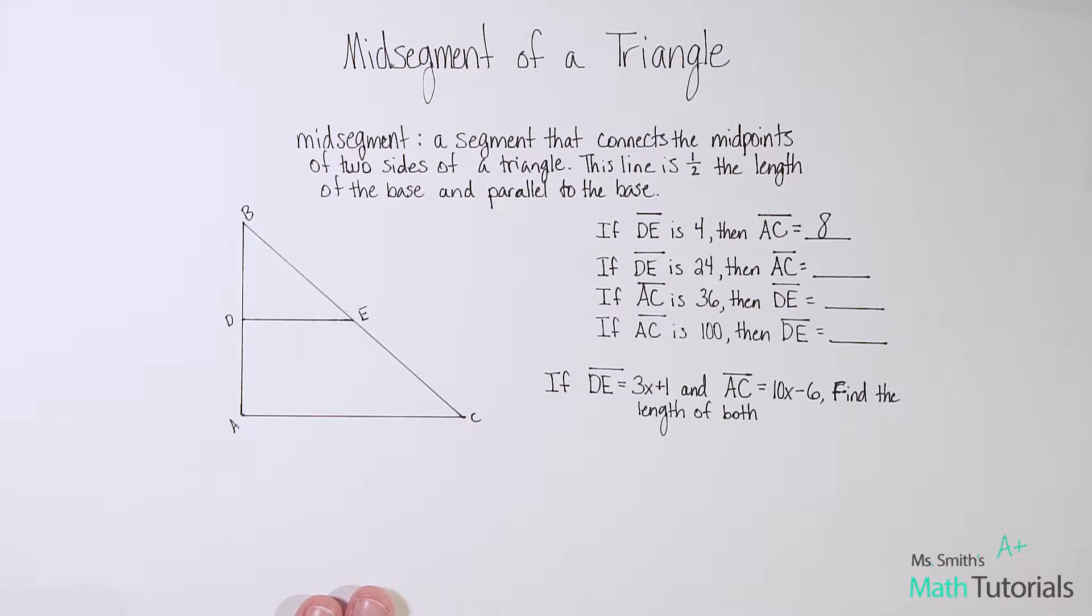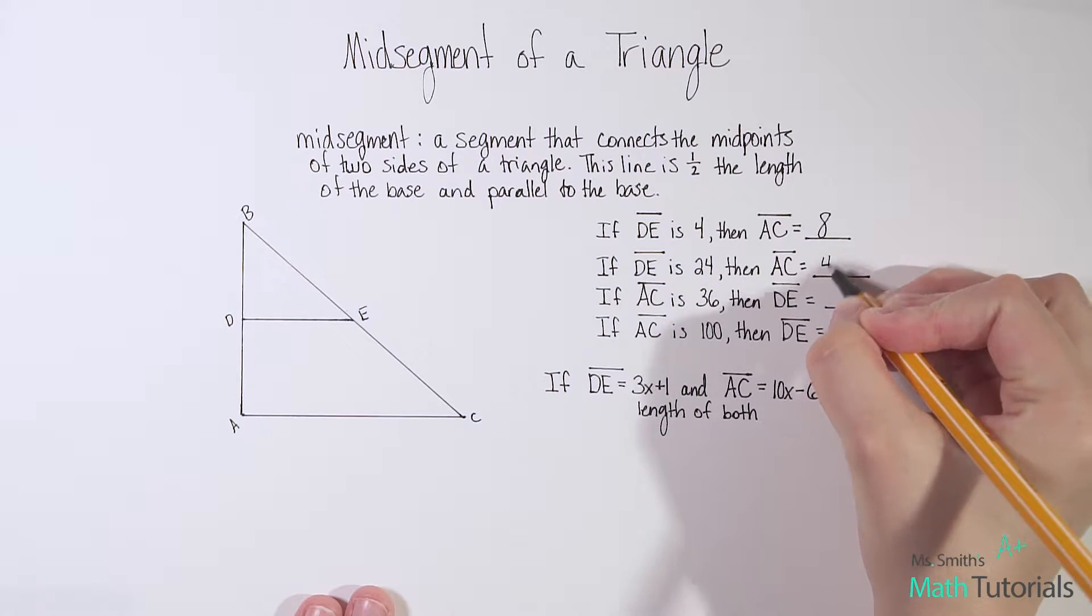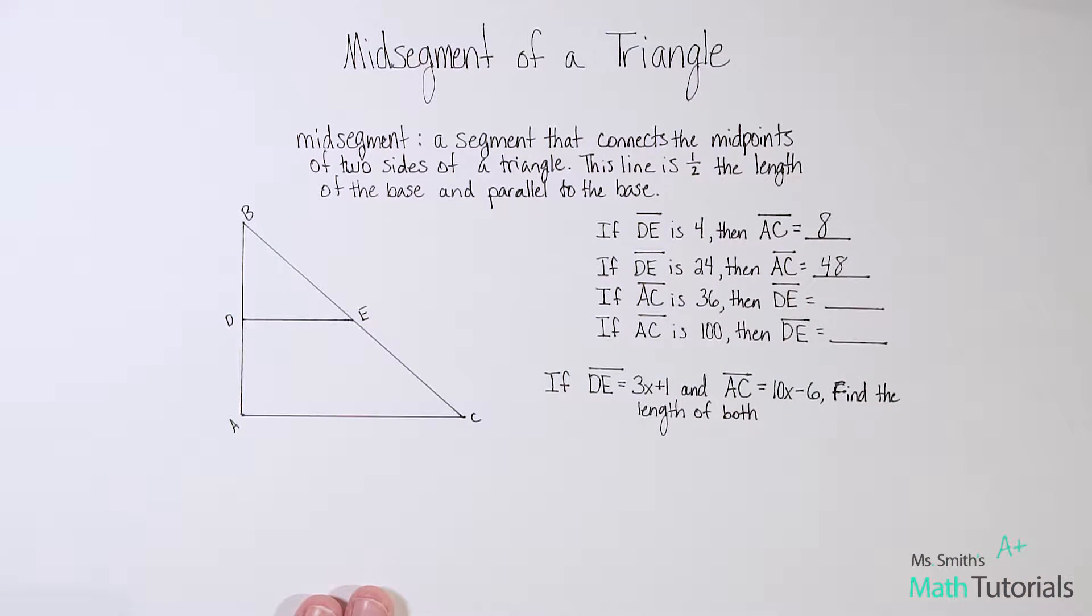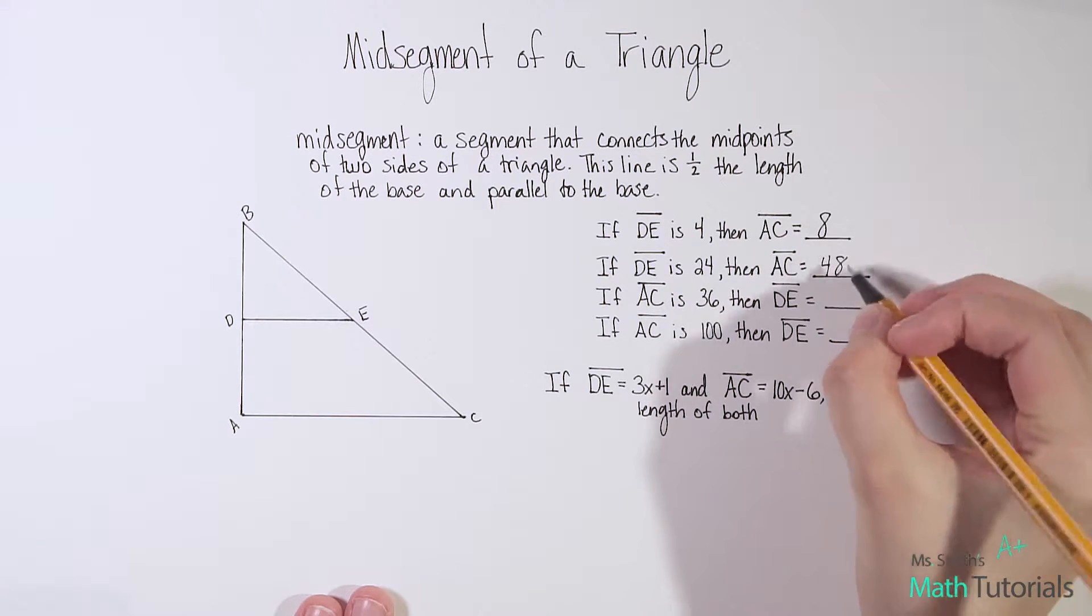What about if DE was 24? So if this was 24, then I know the base would have to be 24 times two, which would be 48. Now let's go in reverse. If I gave you the base, AC was 36, then I know DE is half of that because for whatever this is, this is going to be half of it. So I would do 36 divided by two, which is 18.